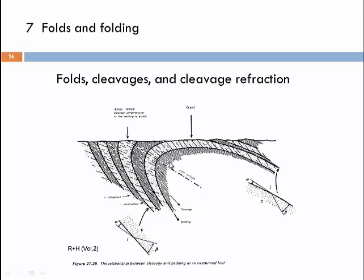This is valuable information. In green-schist facies rocks like those in the Cape Fold Belt, where interlayering of shales and quartzites is common, you can rely on this relationship. In poorly exposed areas where the overall structure is not immediately visible, finding areas where cleavage is perpendicular to layer boundaries tells you that you are mapping a fold hinge. If you find cleavage refraction with oblique orientation between cleavage and layer boundaries — not 90 degrees — you know you are on a fold limb.